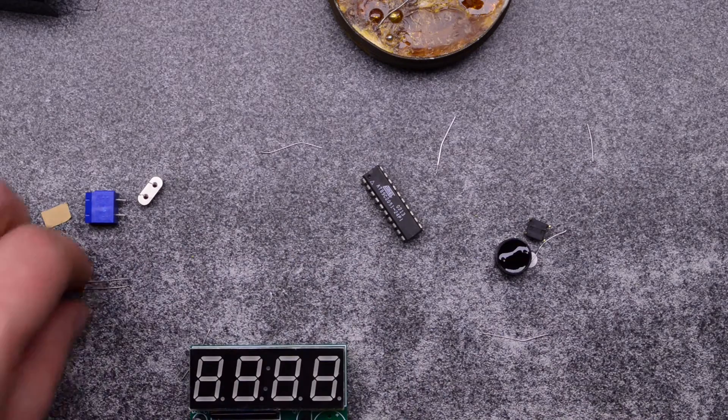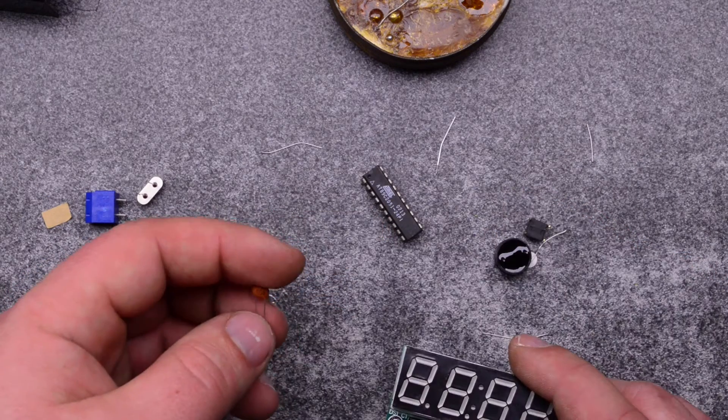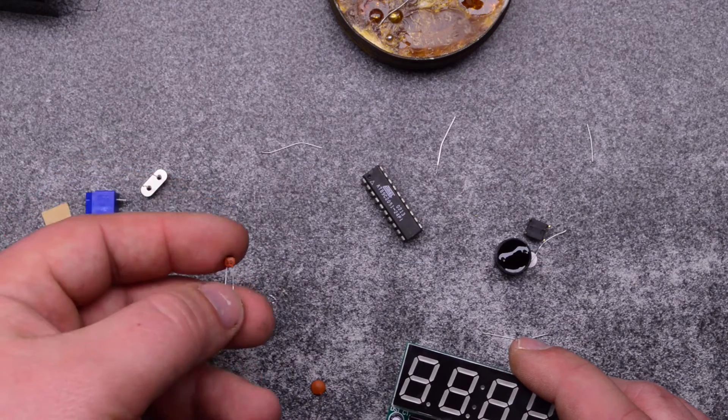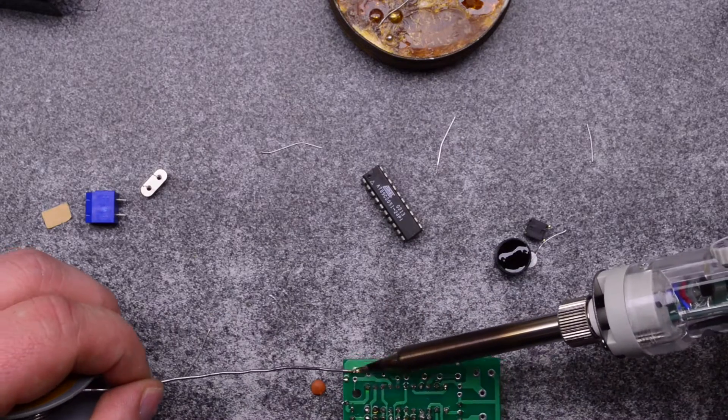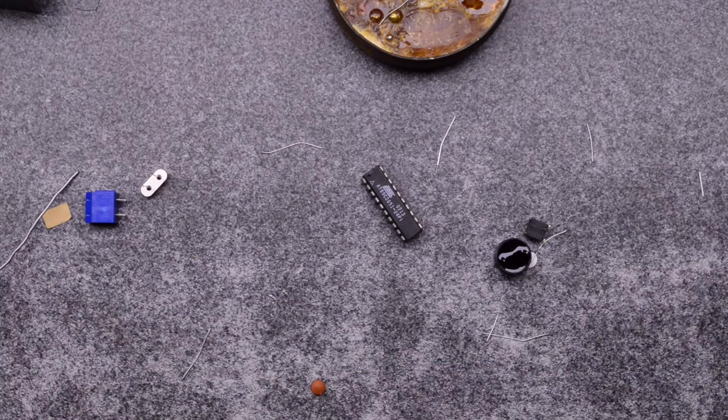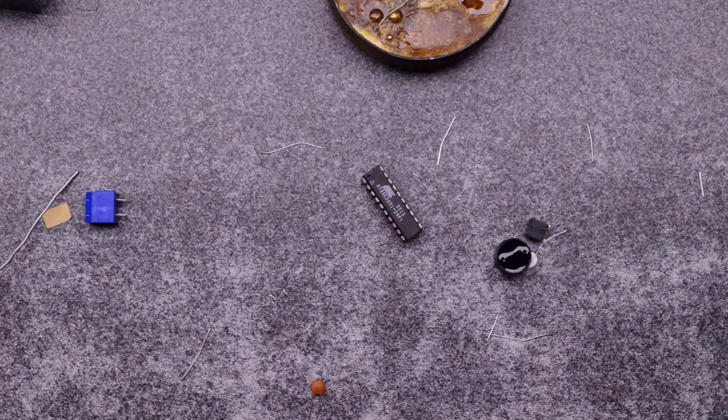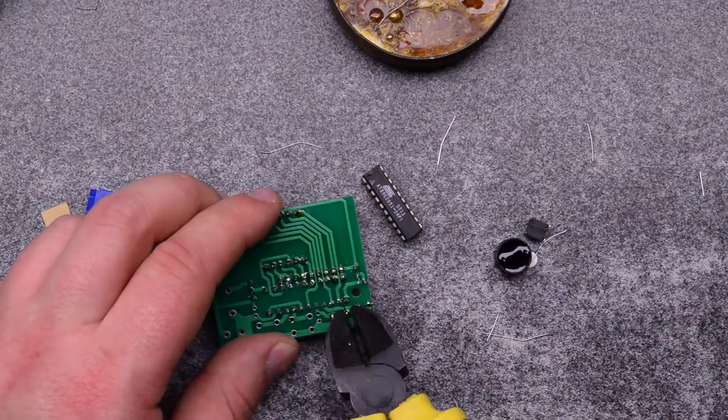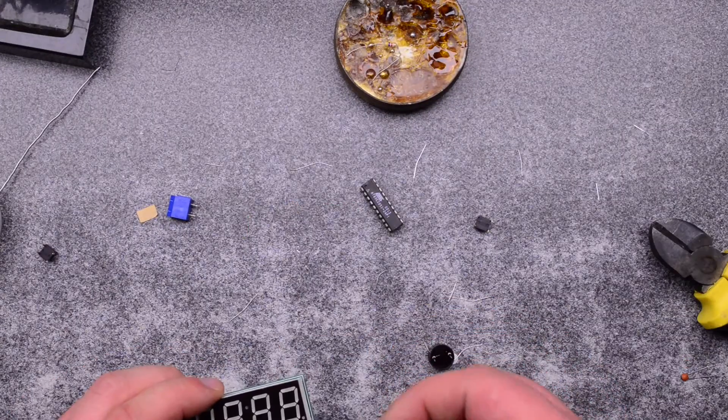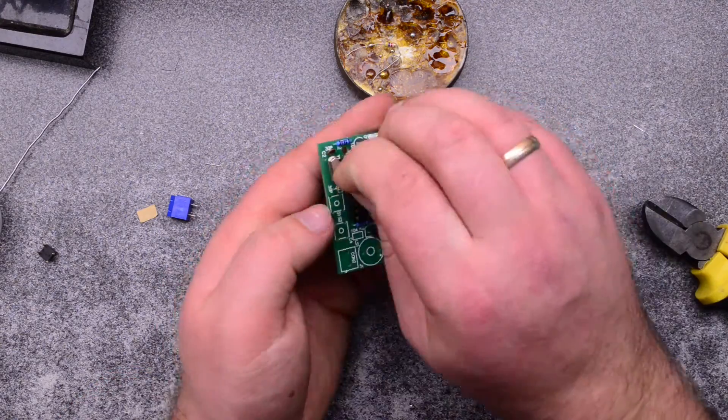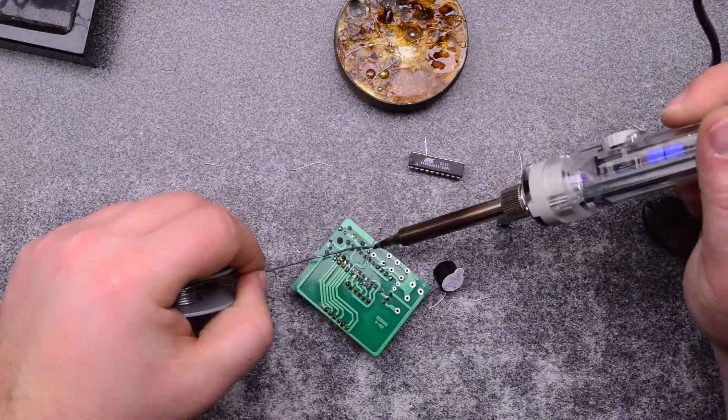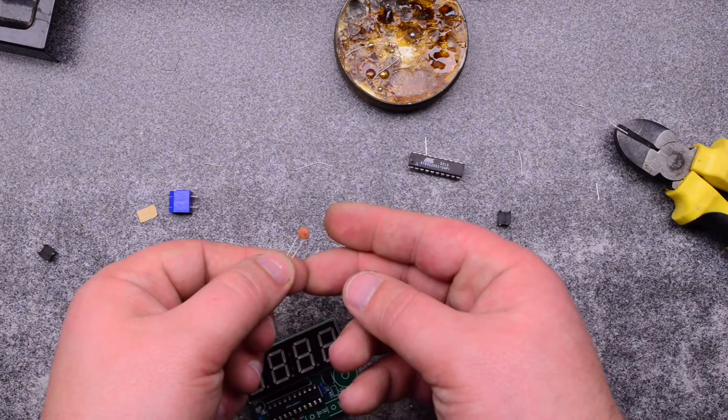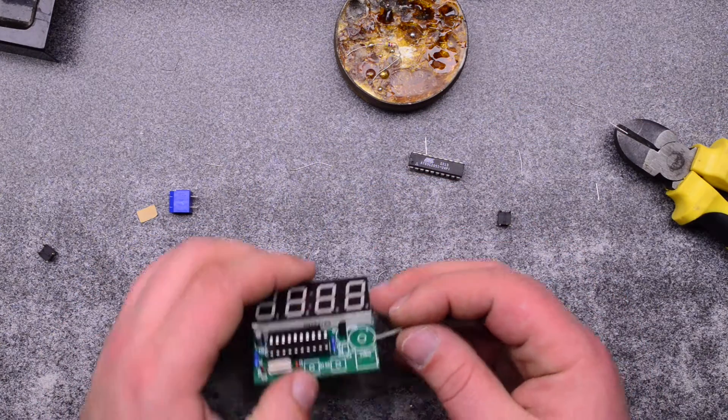Next we can go with the capacitor so they are non-polar. There is written 30 and you can find accordingly 30 on the capacitor itself. Then we can install the crystal. Go with the other capacitor. And we have a bigger capacitor, let's put it into its corresponding place.